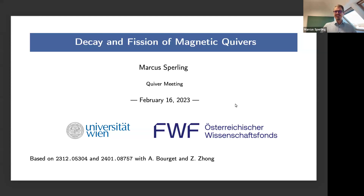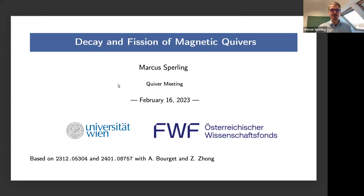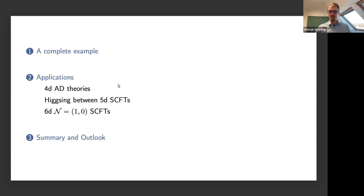For the second part of this double feature, we have Marcus Berling who will tell us about decay and fission of magnetic rivers. Thank you everyone for joining on a Friday afternoon. The plan for the second part is to go through a complete example where we know everything in terms of the classical Higgs mechanism, then go through decaying fission and growth subtraction, show the Mathematica notebook available on Anton's website, and then have applications to theories in four, five, and six dimensions, followed by a summary and discussion.